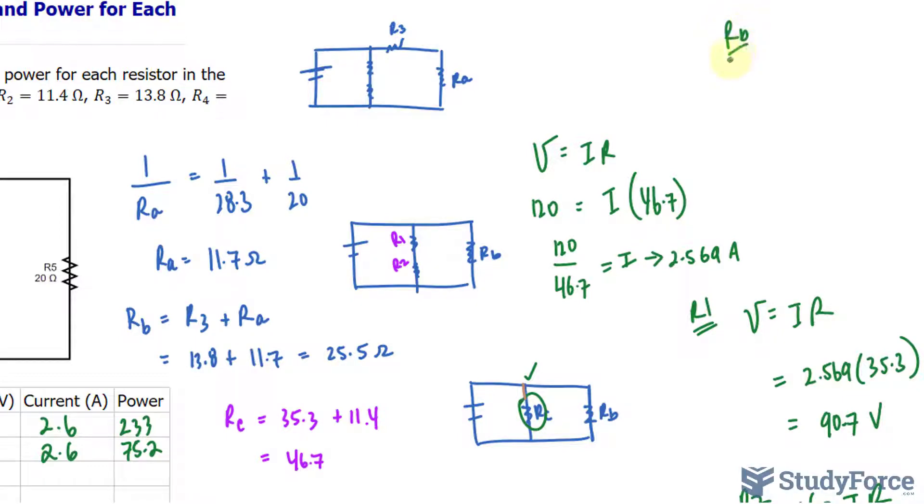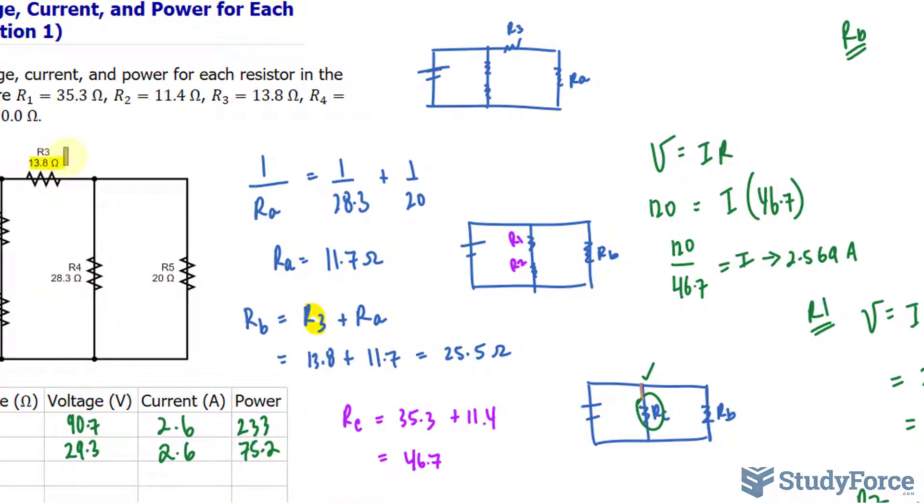What I will do from here is find out information about RB. If you look back, RB is composed of R3 and a combination of two resistors that were in parallel represented as RA. Let's worry about RB first, then get information about R3.